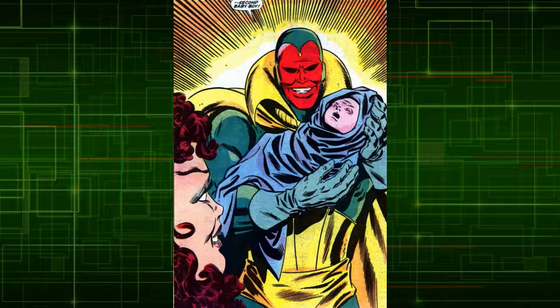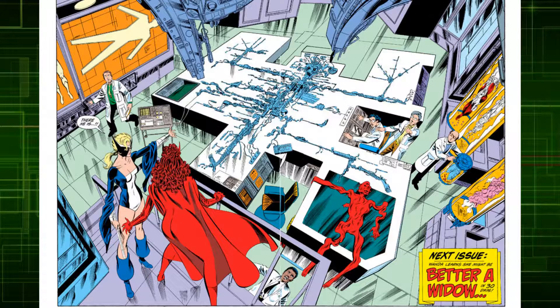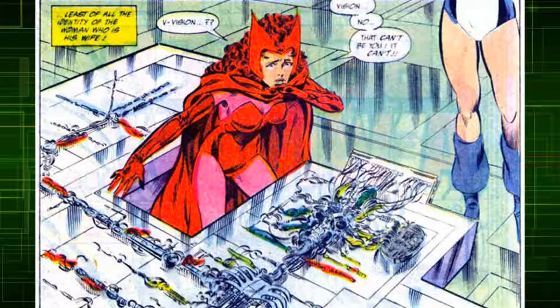Wanda would eventually somehow become pregnant through magical means and give birth to two sons, Tommy and Billy. They were created from energy from the Dark Realm of Mephisto and its schemes would be revealed later on. While Vision was part of the West Coast Avengers, Immortus would manipulate rogue agents of the US government to abduct Vision and dismantle him — another event of Immortus's plan to make Wanda his pawn.